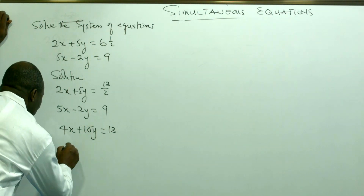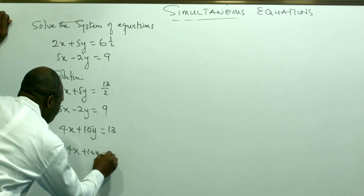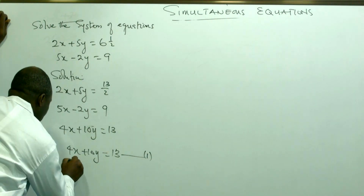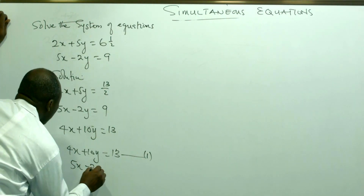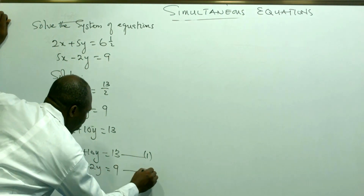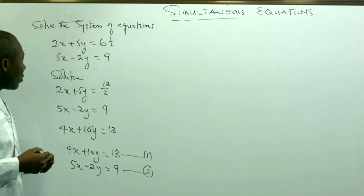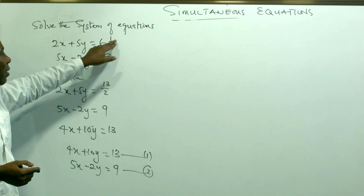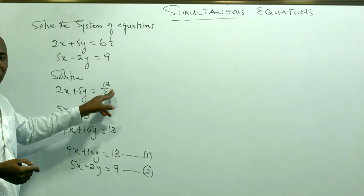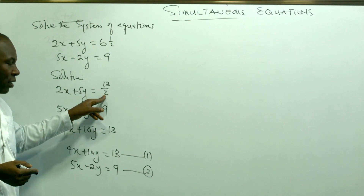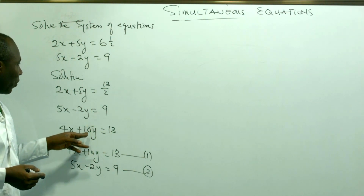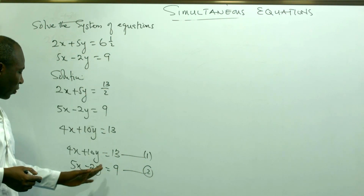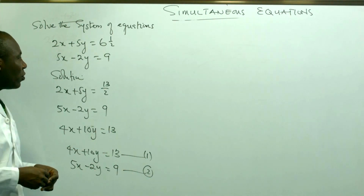So we have done something to this equation: we removed the mixed fraction, converted it to an improper fraction first, then multiplied through by 2 to remove the denominator. So now we have our two equations — equation 1 and equation 2 — in a cleaner form, and we now decide which variable we want to eliminate.